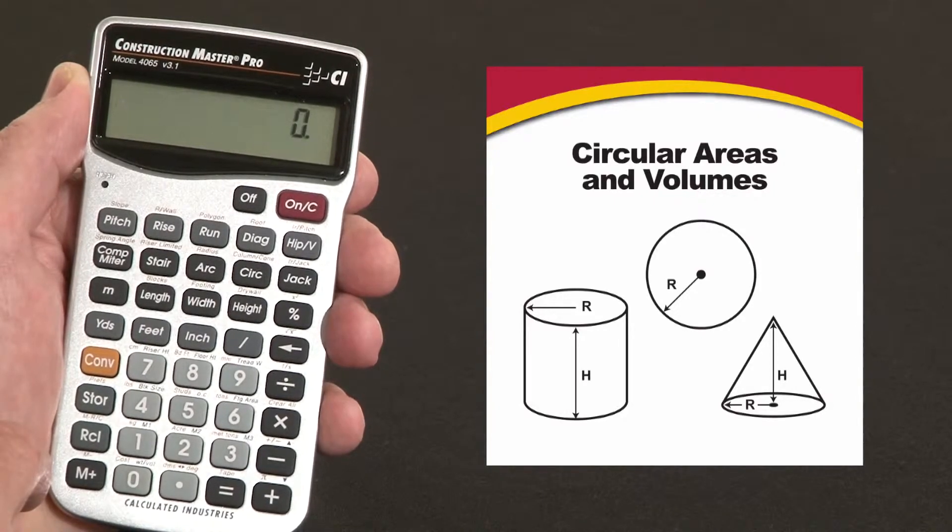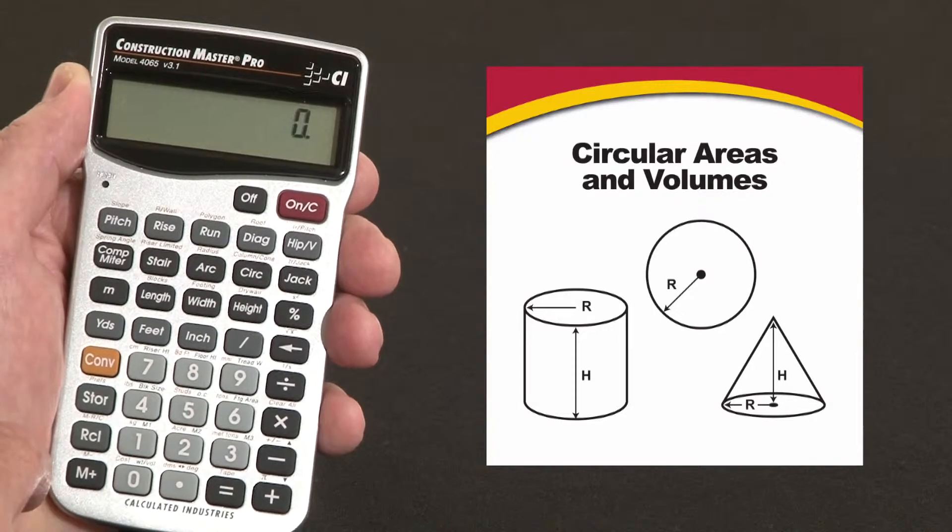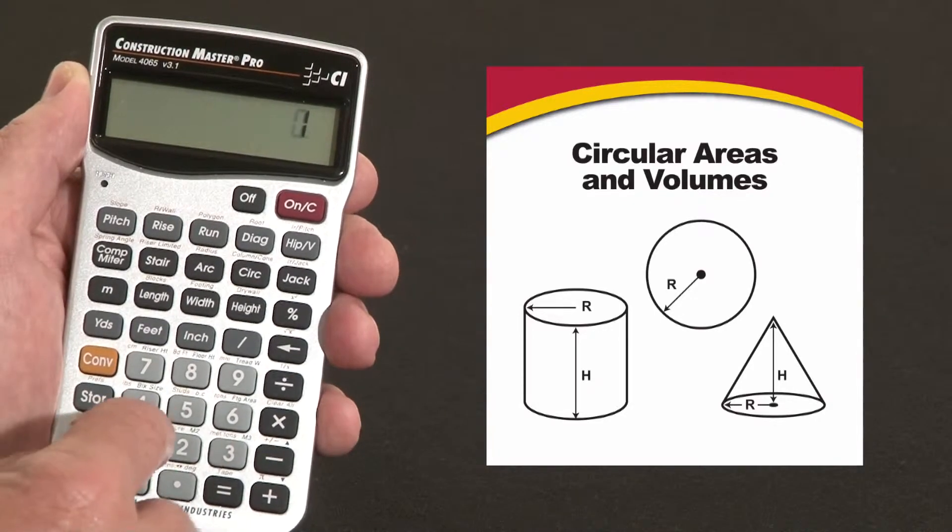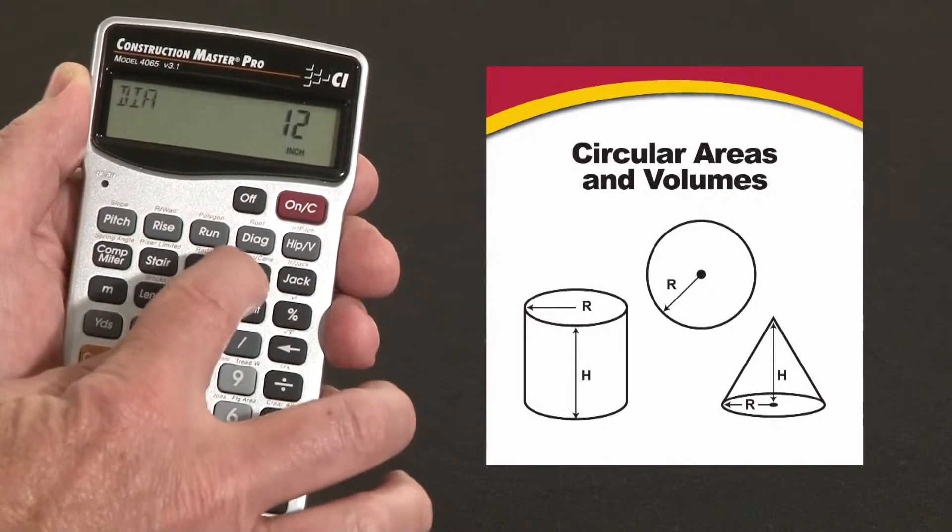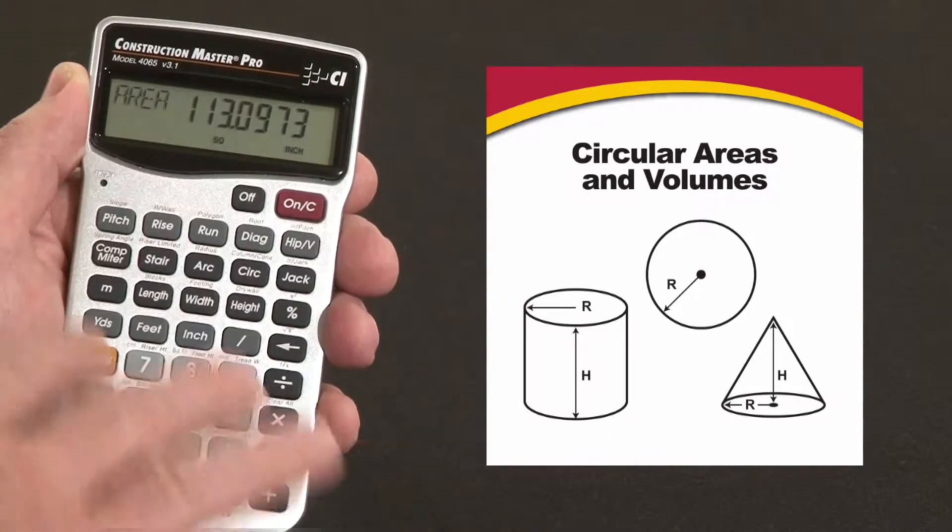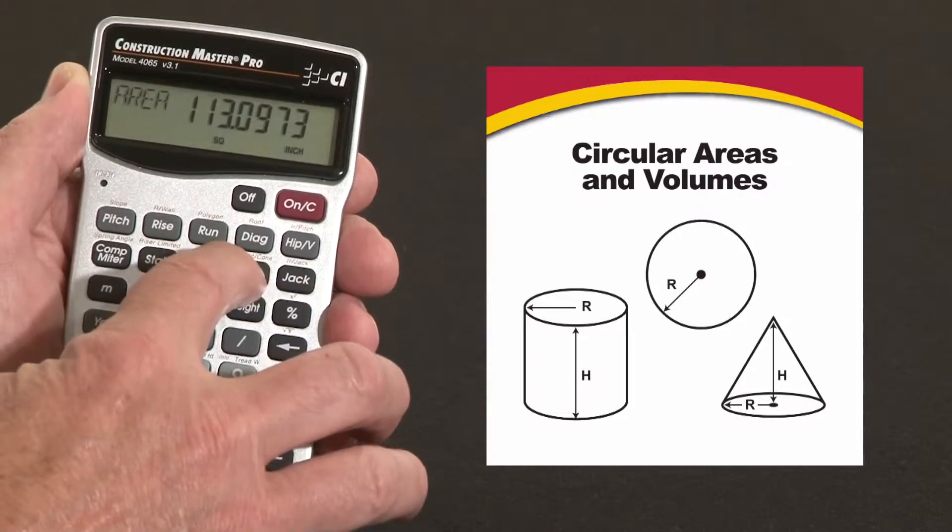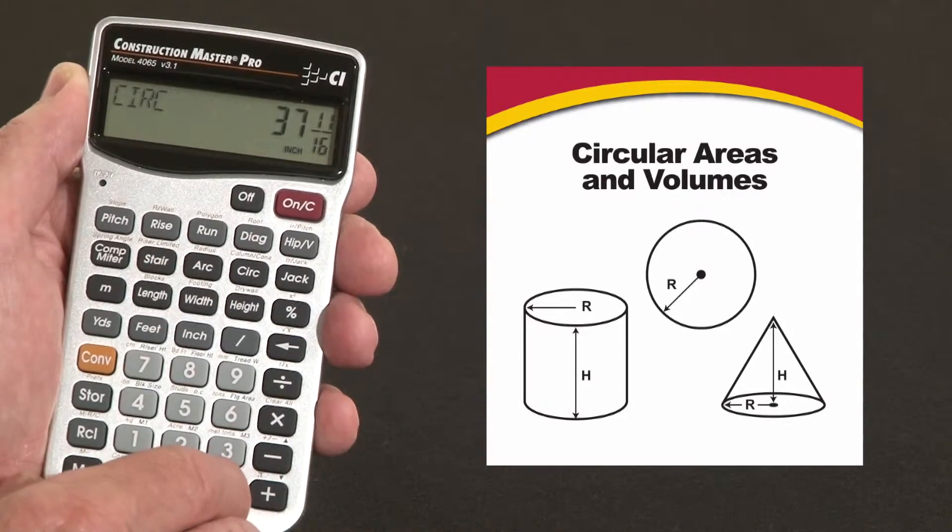This feature is great for circles, columns, sonotubes, arched openings, or really anything round. You start by entering the diameter—let's say 12 inches—and hit circle. That's the diameter. Press it again, it gives me the surface area at the top of that circle. Press it again, it gives me the circumference around that circle.